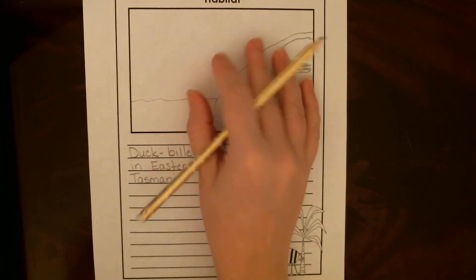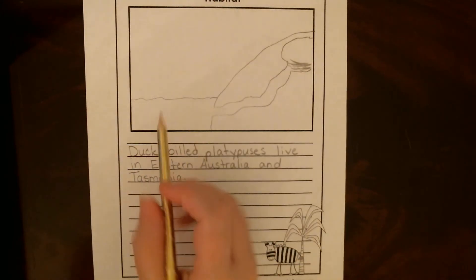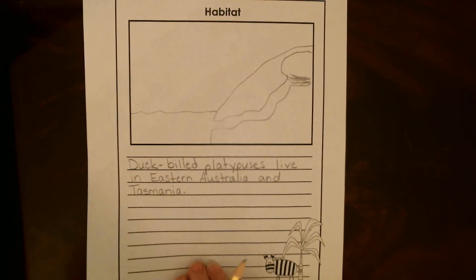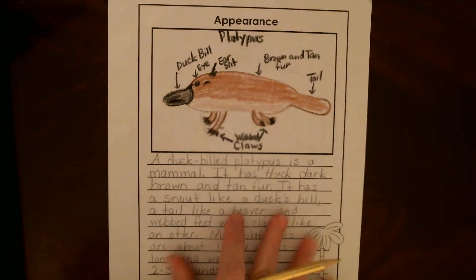Okay, so I'll color my picture, make it real detailed with my sky and everything. Make sure that people can tell that this is a lake. All right, just to review with you, make sure that you guys drew a nice picture of your animal with labels.